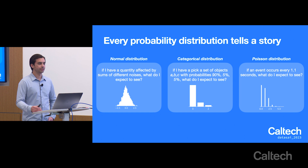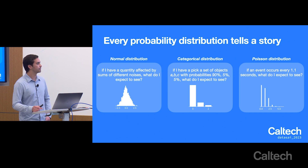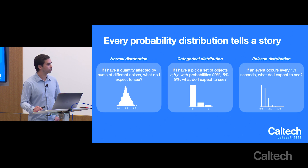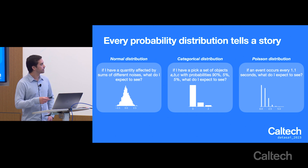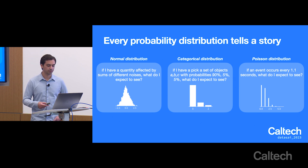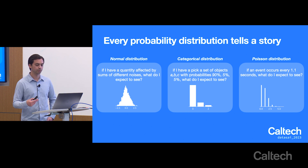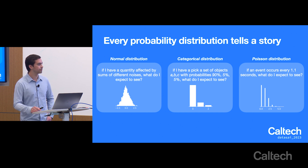Every probability distribution tells a story, and these stories can vary over different experiments or questions. For example, a normal distribution models the idea that if you sum different noises with different probability densities, they will eventually converge to the normal distribution by the central limit theorem. The categorical distribution models the probabilities of sampling different objects. And the Poisson distribution models how many events would occur given a probability of that event occurring every interval.